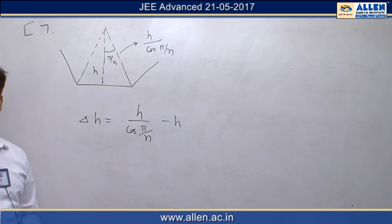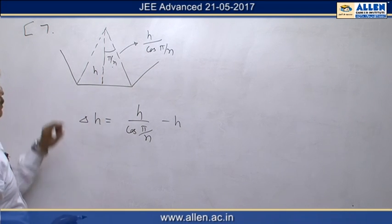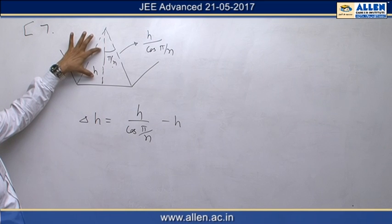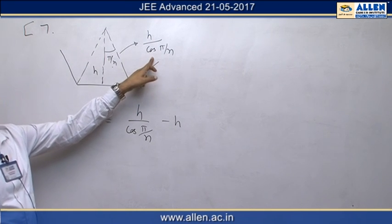Question number 7, in case of a regular polygon the semi-angle is pi by n, this height is h, so slant height becomes h upon cos pi by n.